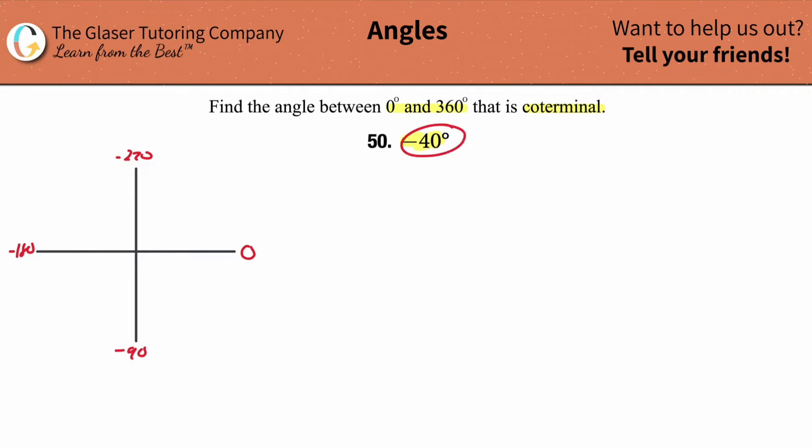So when you rotate negative 40 degrees, what that means is that you're going to start on the positive x-axis. You always start on that positive x. And what you're going to do is you're going to rotate this now downwards or clockwise 40 degrees. So maybe roughly around there or so. So this angle in there will represent the negative 40 degrees.